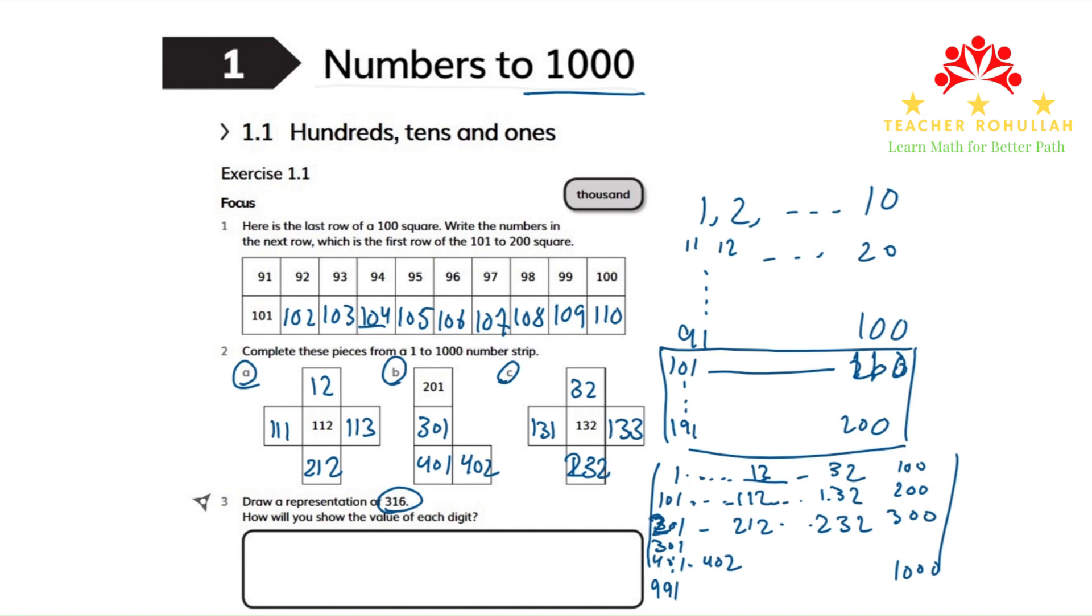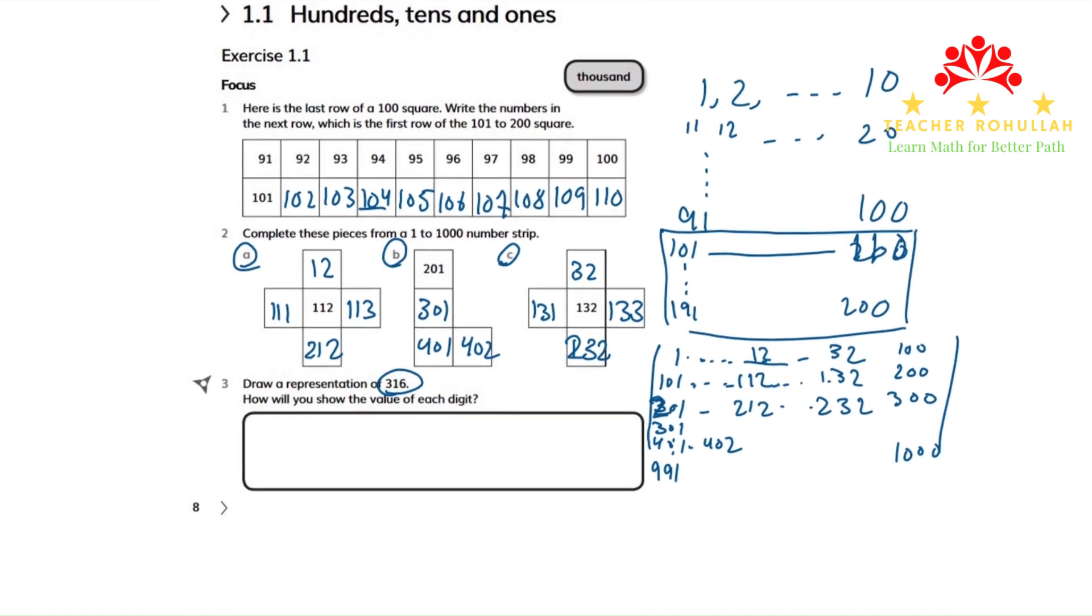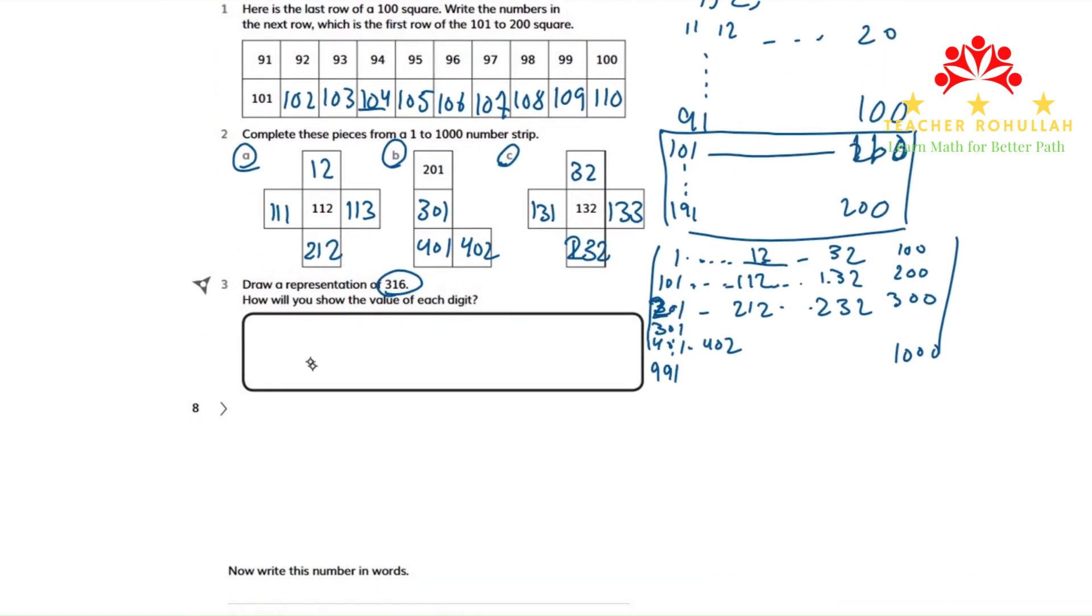Let me scroll it a bit down. I will draw the representation of 316 using an abacus. So on abacus, we have the hundreds bar, we have the tens bar, and we have the ones bar. This is ones, this is tens, and this is hundreds.